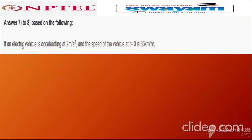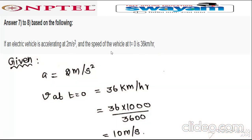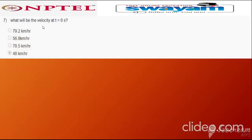Questions seven and eight are based on the following data: an electric vehicle is accelerating at 2 m/s² and the speed at t = 0 is 36 km/h. Converting 36 km/h to m/s by multiplying by 1000/3600 gives 10 m/s.